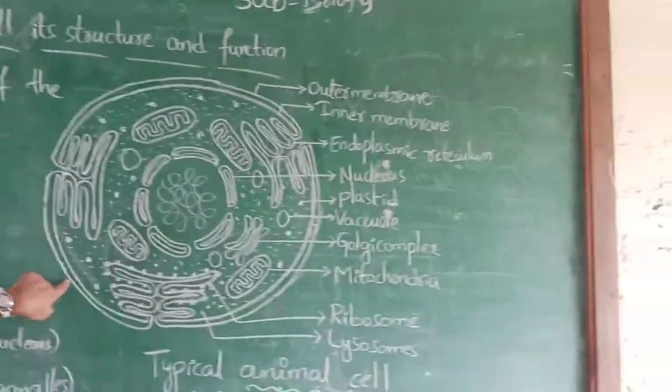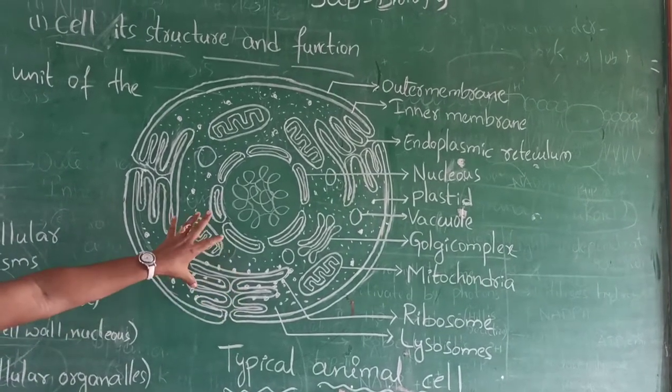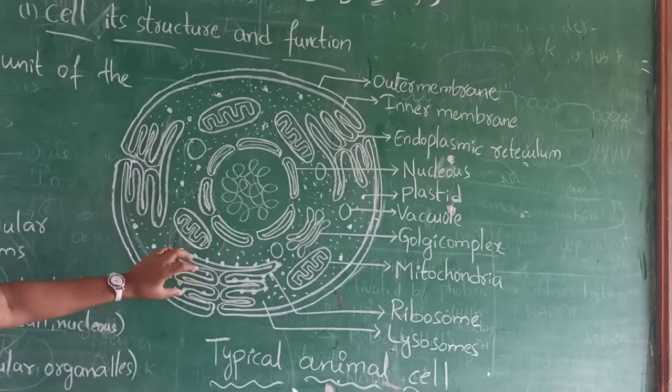This is the outer membrane and this is the inner membrane, and here total number of organelles will be there. One by one, I will explain.